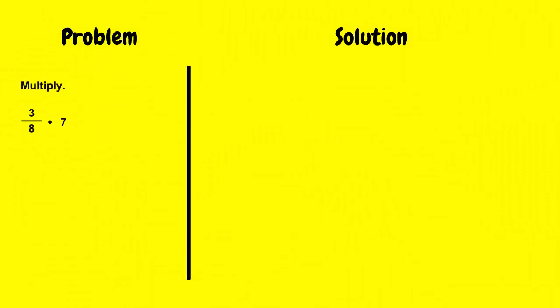And this problem here says multiply 3 over 8 times 7. So the first thing I'm going to do is rewrite 7 as a fraction. So I would put it over the value 1. And I have to multiply 3 times 7 over 8 times 1. And I check, what can I simplify?